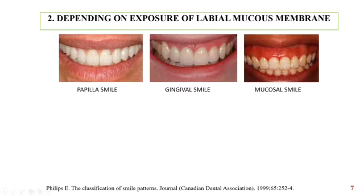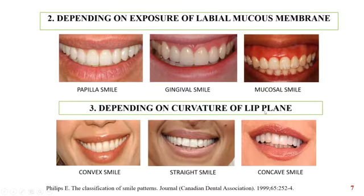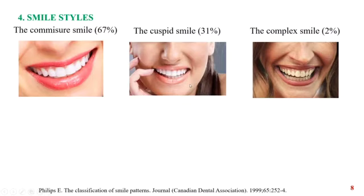The papillary smile exposes only the interdental papilla, whereas the gingival smile exposes also a band of attached gingiva, and the mucous smile exposes the alveolar mucosa. Based on the curvature of the lip plane, smiles can be classified as convex smile, straight smile, and concave smile. Based on various styles, smiles can be broadly classified as commissar smile, cuspid smile, and complex smile.